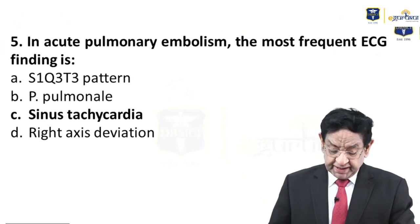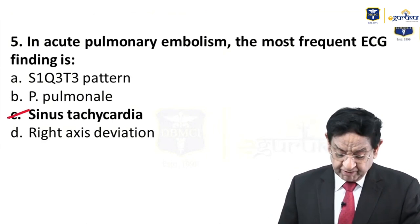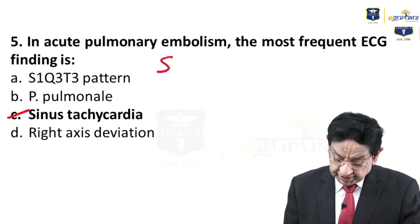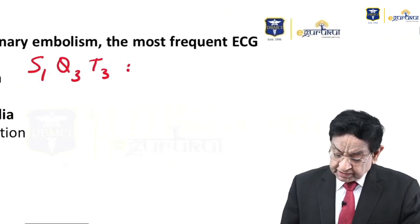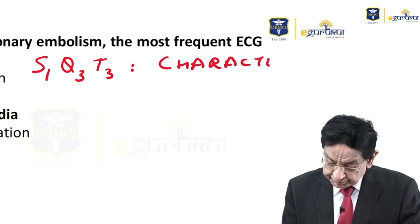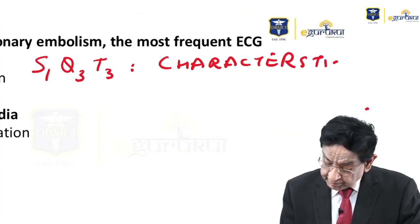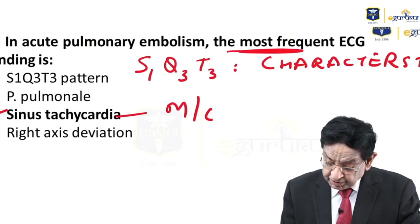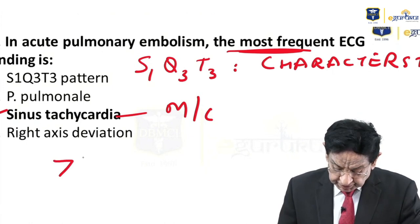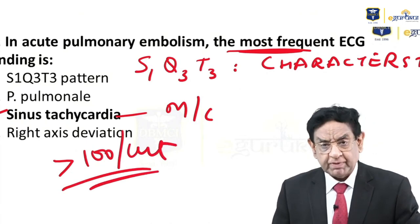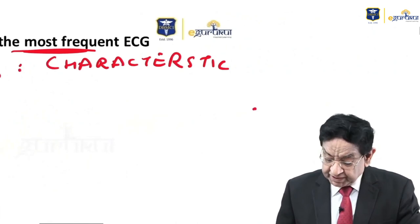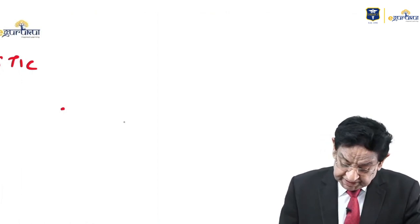Question 5: In acute pulmonary embolism, the most frequent ECG finding is tachycardia. S1Q3T3 is the most characteristic finding. Tachycardia means heart rate more than 100 per minute — this is the most common finding. S1Q3T3 is the most characteristic finding. These are two different questions.